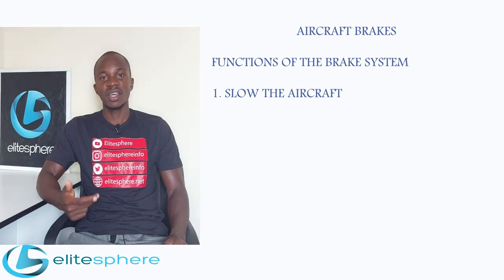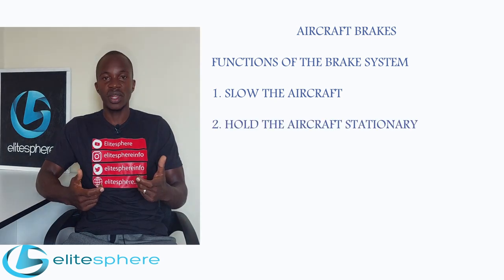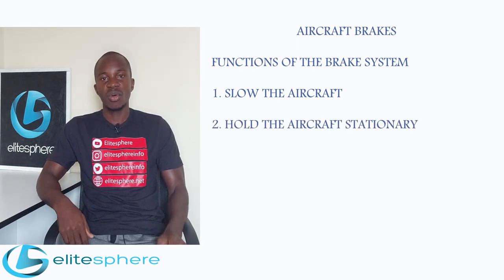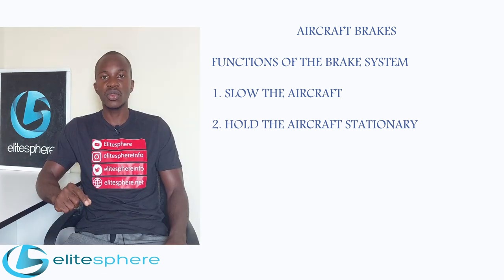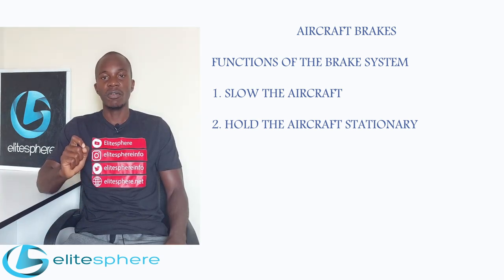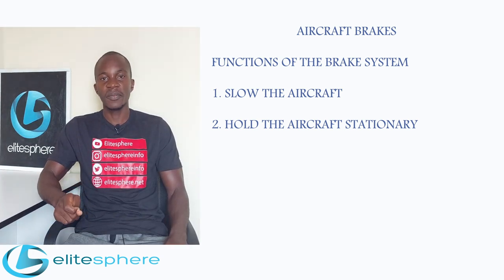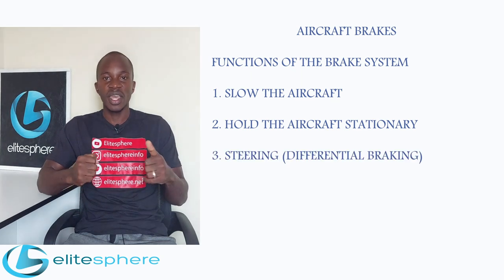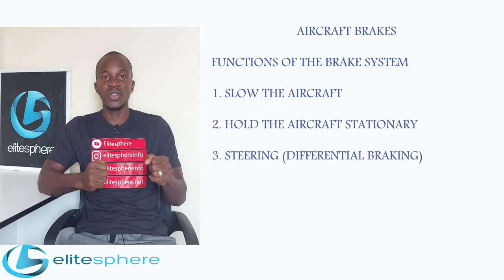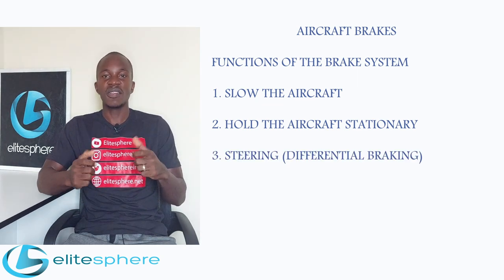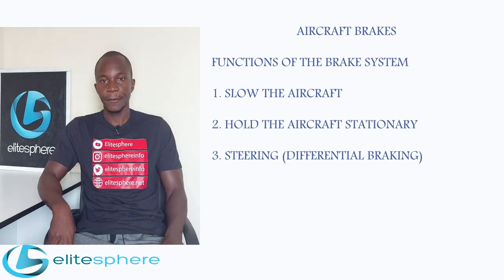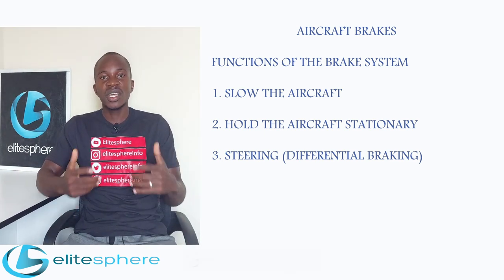The second function of an aircraft brake is to hold the aircraft stationary during engine run-up or engine ground running. The third function of the braking system of an aircraft is to enable steering the aircraft during ground maneuvers. This is achieved through the use of differential braking.